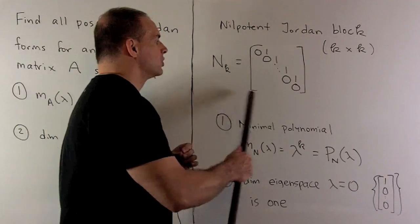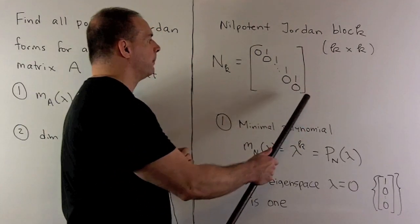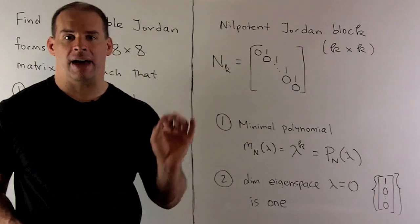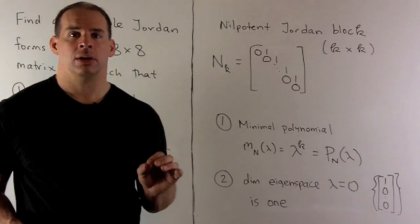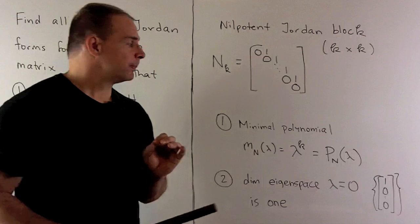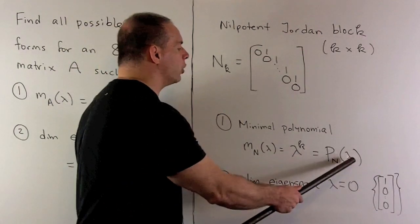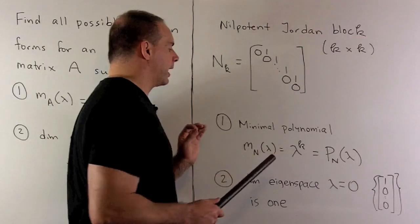Here we're going to have square matrices, k by k, zeros everywhere except for the diagonal above the main diagonal where we have ones. Two properties worth noting. First, the minimal polynomial of n is going to be equal to the characteristic polynomial, which is lambda to the kth power.